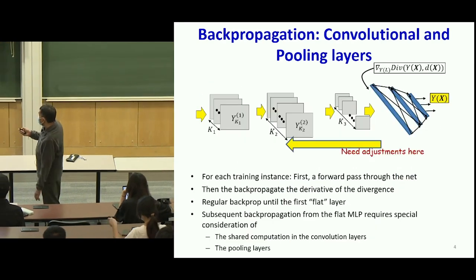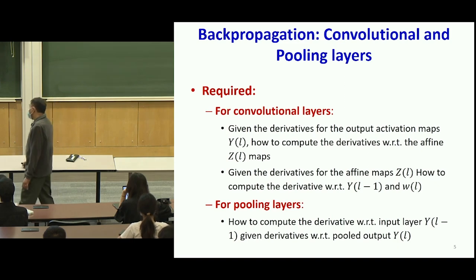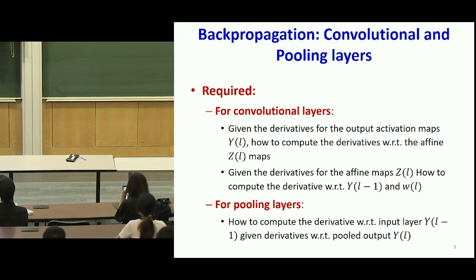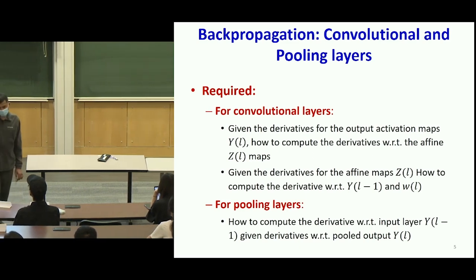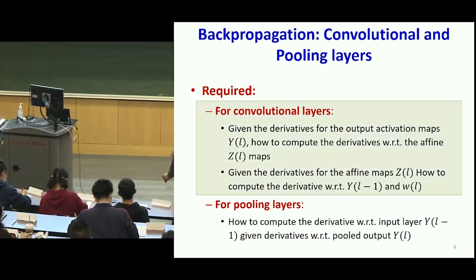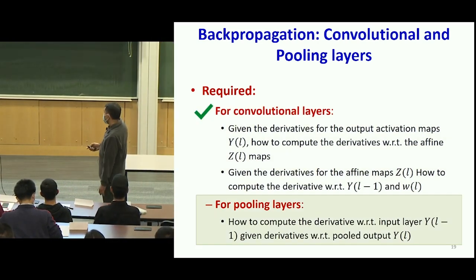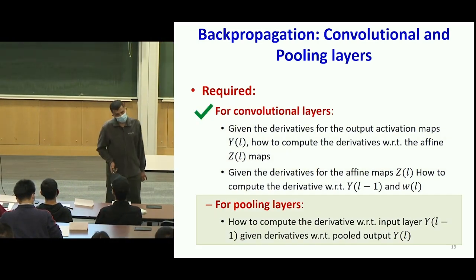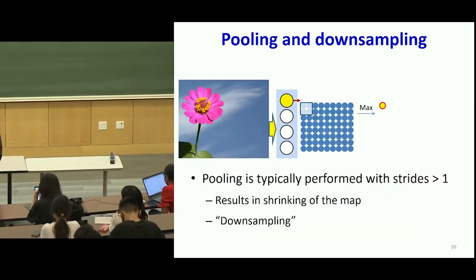CNNs have both convolutional layers and pooling layers. For pooling layers, we had to figure out how to compute the derivative for the input maps given the output pooled maps. This portion we already did in the last class, so we're going to focus on the pooling layers in this class.